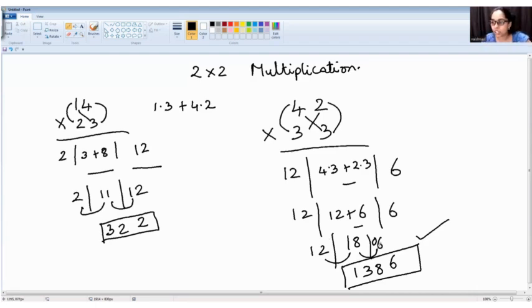It is 6 as it is. 0 plus 8 is 8. 1 plus 2 is 3. And one answer is 1, 3, 8, 6.